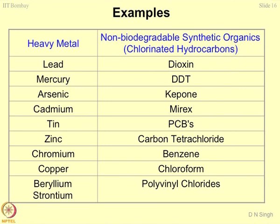Some years back there was a debate about certain brands of shoes and chappals — rubber soles made of PVC can leach out beryllium and strontium, which are not good for health. Similarly, there was a ban on toys from a certain country because polymers contain heavy metals that children tend to chew or come into direct contact with. The key word is leaching — hazardous material gets easily dissociated from waste and is free to be consumed directly or indirectly.